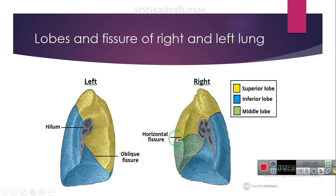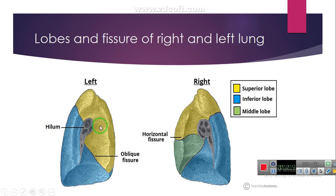Here you can see the right lung with its horizontal fissure and oblique fissure, and the superior lobe, middle lobe, and inferior lobe. The left lung is divided by the oblique fissure into the superior lobe and the inferior lobe.